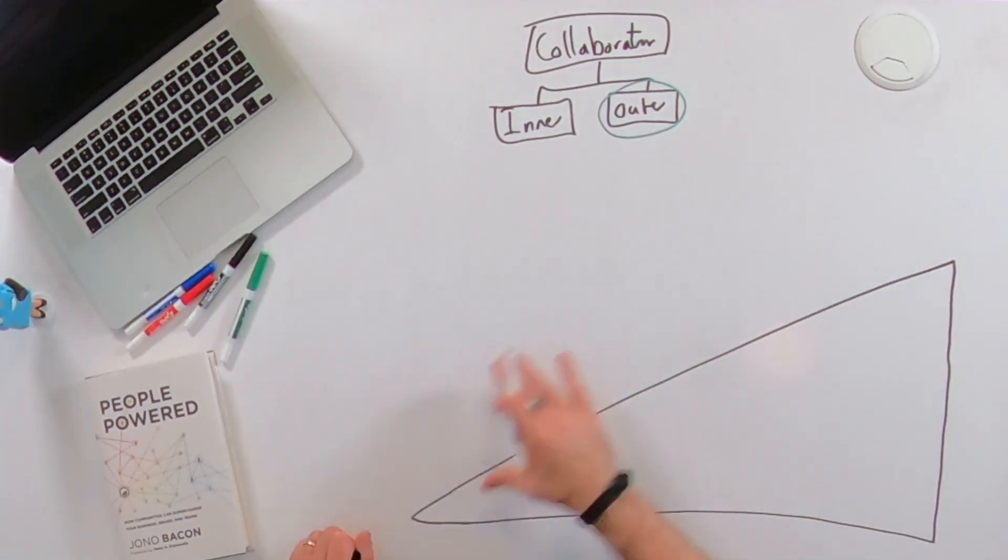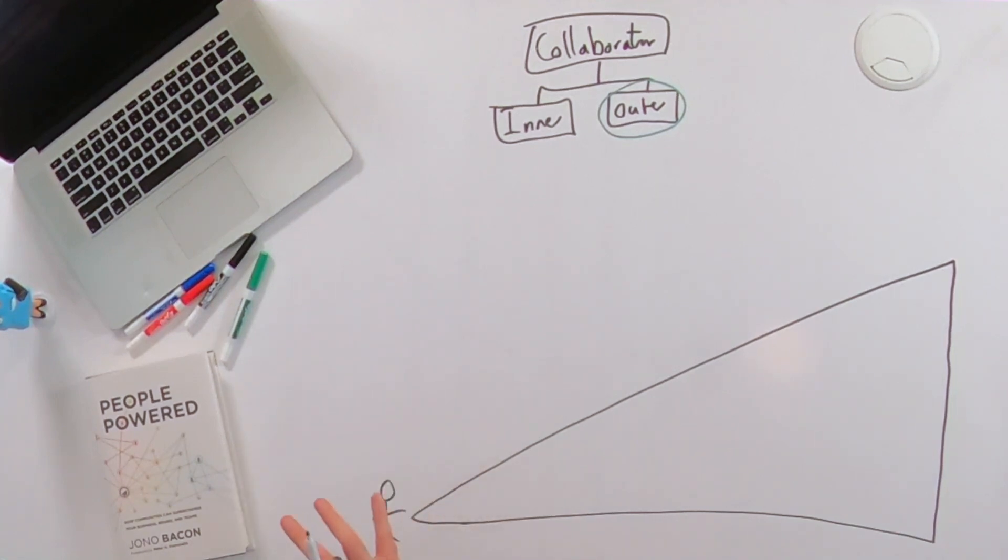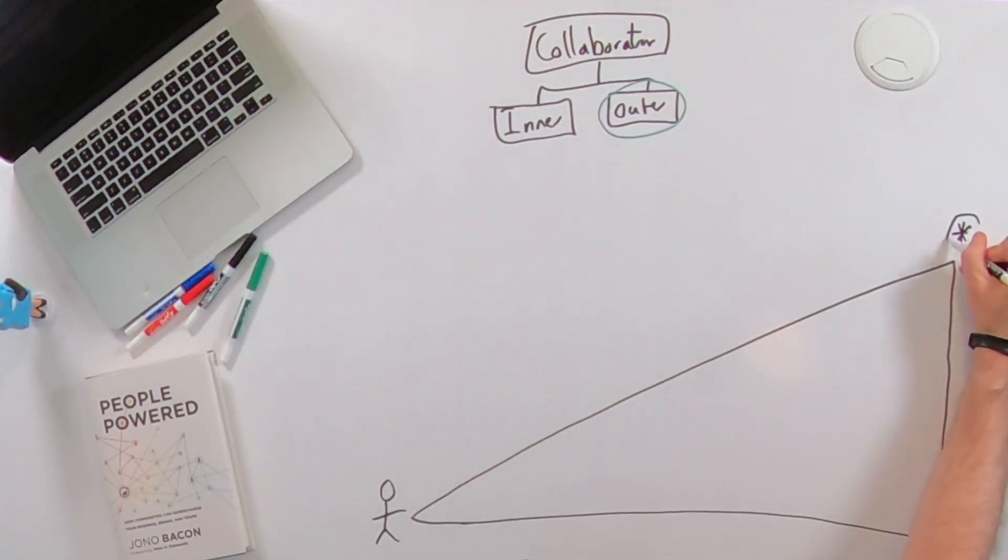We therefore need a nice big juicy triangle. This is our onboarding journey. And there's a start and an endpoint to our journey. So the starting point here is our target developer. And the end game of this journey is that they actually build something that offers value to them.